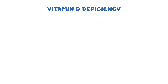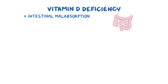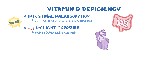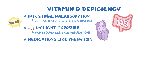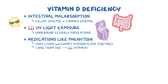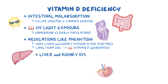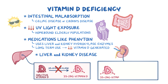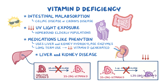Vitamin D deficiency is the most common cause of both rickets and osteomalacia. Causes include intestinal malabsorption, which can be seen with celiac disease or Crohn's disease; not enough UV light exposure, like in homebound elderly populations; and medications like phenytoin, which use liver and kidney hydroxylase enzymes for their own metabolism, so with long-term use there's not enough vitamin D being generated. Finally, there's liver and kidney disease. Rickets or osteomalacia can occur in chronic liver disease due to the liver's inability to turn inactive vitamin D into 25-hydroxyvitamin D, and similarly in chronic kidney disease, where the kidneys can't turn 25-hydroxyvitamin D into 1,25-hydroxyvitamin D. Both conditions result in an active vitamin D deficiency, which leads to impaired bone mineralization.